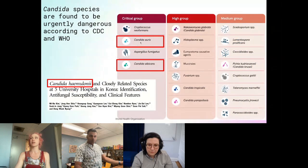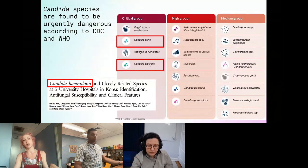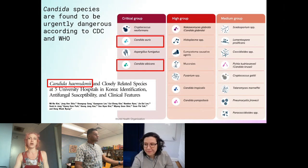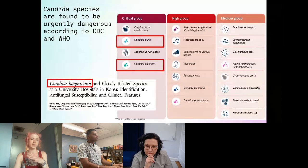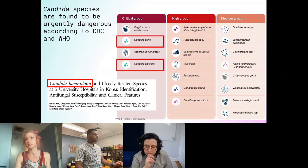Candida auris and Candida albicans are in the critical group according to the CDC and WHO, and this is based upon deaths, spread, and dangerous phenotypes such as multidrug resistance. I have also highlighted Candida haemulonii because despite it not having the same amount of deaths and spread as the other Candida species, it is still multidrug-resistant, which is a dangerous phenotype to have.